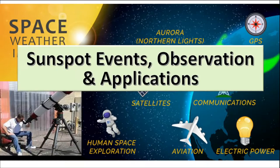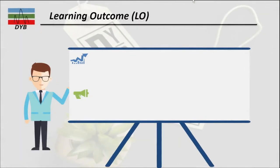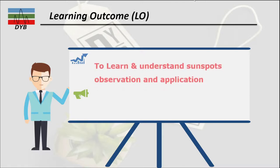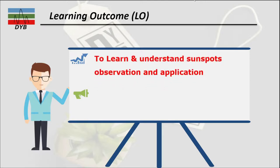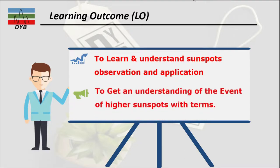Hello and good day to all of you. In this video lecture we are going to learn about sunspot events which have happened in the last centuries, and also look at how we can observe sunspots and their applications. Before starting, we have some learning objectives: the first learning outcome is to learn and understand sunspots and their observation and applications, and also to get to know about the events of higher sunspot activity and the terms used for sunspots on the sun.